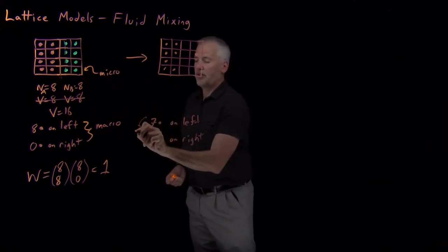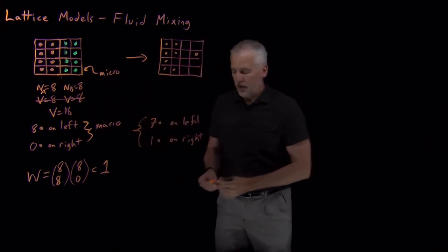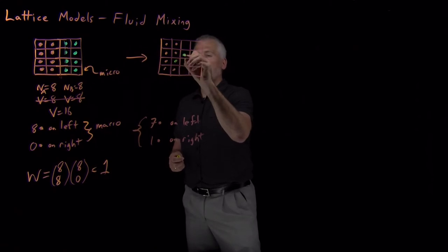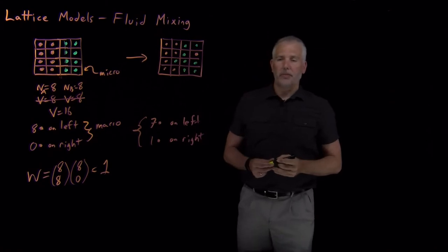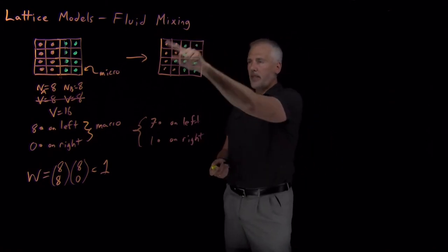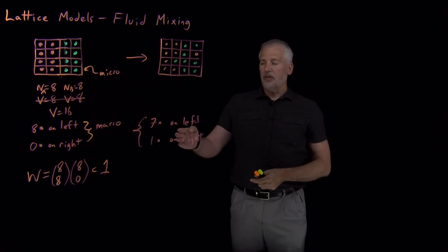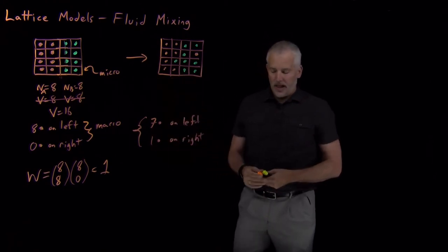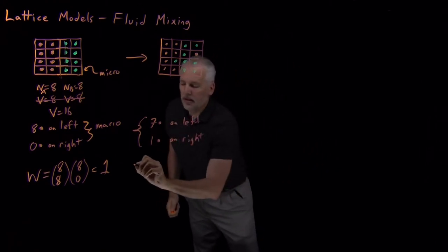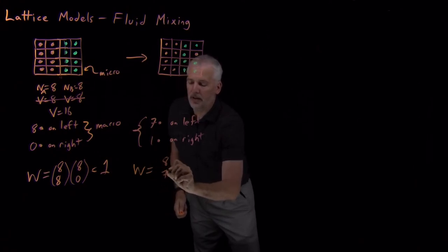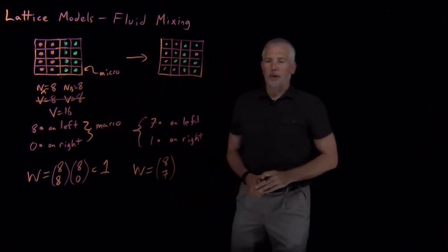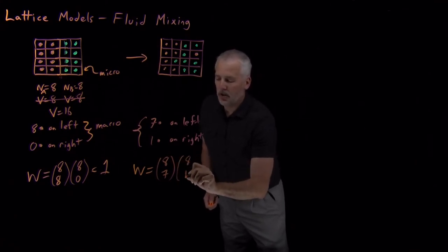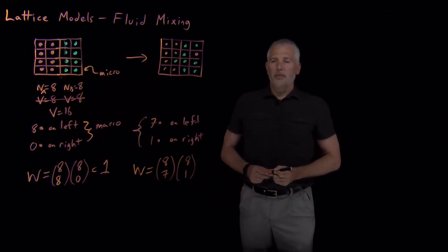So that's, again, my macrostate. I can draw an individual microstate just so it's clear what I'm talking about. I still have eight of each type of particle, so I'm going to fill every grid position in the box, and I can ask how likely is it that this, or what's the multiplicity, how many different microstates could I have drawn that are consistent with this macrostate? How many ways do I have of choosing which seven spots on the left to occupy with orange molecules and which one spot on the right to occupy with green molecules?